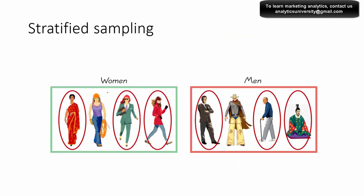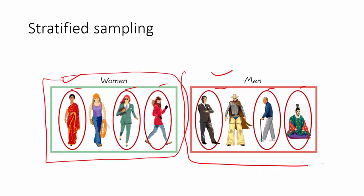For example, we have men and women and we want to select three women and three men from four elements in each group. We simply segment into two different groups and then randomly select three out of those four. The selection of the three is totally random; we just segment first before selecting. In modern software, if you specify the classification variable it will automatically do the segmentation for you.